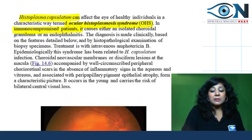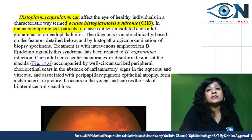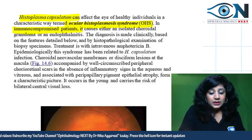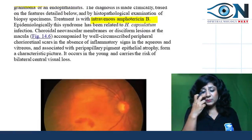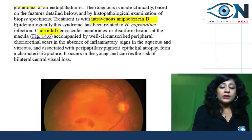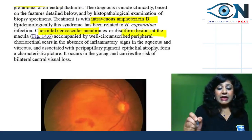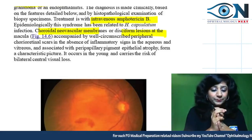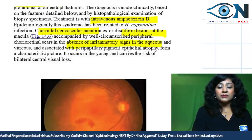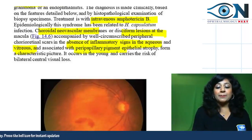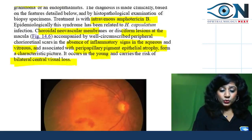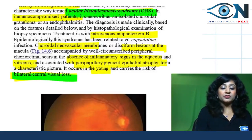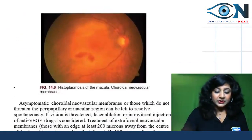Diagnosis of histoplasmosis is made clinically and by histopathological examination. Treatment is intravenous amphotericin B. Epidemiologically it is related to Histoplasma capsulatum infection. The ocular features include choroidal neovascular membranes, well-circumscribed disciform lesions with no specific inflammatory signs in the aqueous or vitreous, peripapillary pigment atrophy — a very characteristic feature in young people — and bilateral central visual loss.